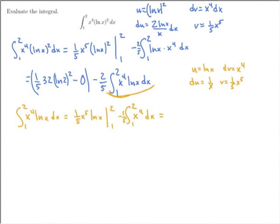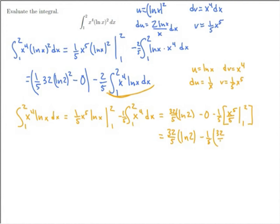Plugging in 2, I get 32 over 5 natural log of 2 minus 0. Plugging in 1, natural log of 1 is 0. Minus 1/5 times x to the fifth over 5 from 1 to 2. So this is 32/5 natural log of 2, minus 1/5 times (32/5 minus 1/5). Distributing, I have 32/5 natural log of 2 minus 32/25 plus 1/25, so minus 31/25.